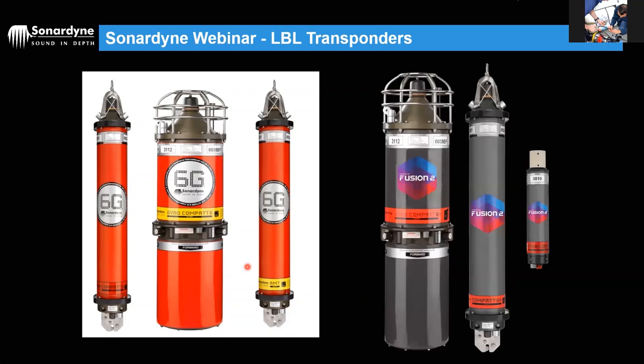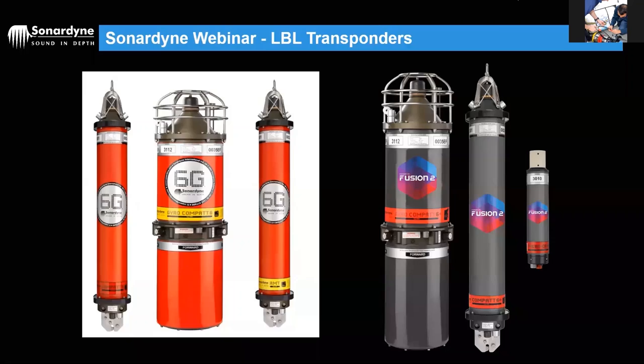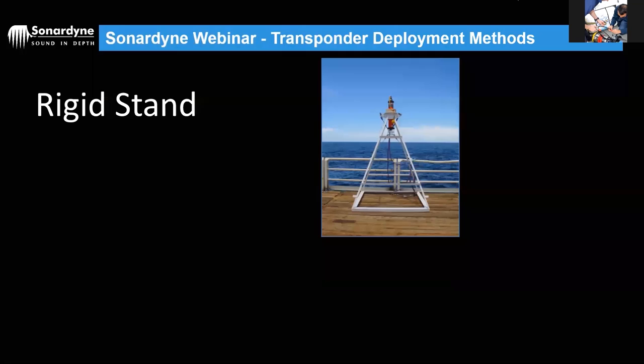The Six Plus family looks similar — same hardware but with a different grey jacket and purple/pink label indicating the latest programming and protocols. Many 6G units can be upgraded to Six Plus depending on hardware age. The Micro Compact does essentially the same job but in a smaller form factor, designed for quick and short-duration deployments.